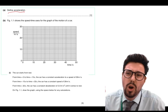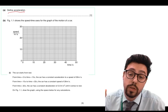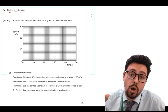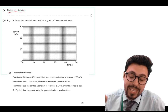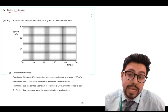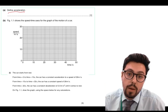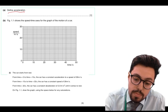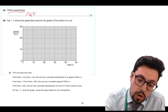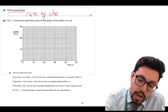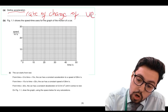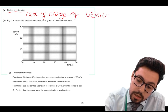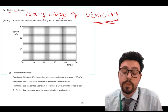The really common mistake people were making on this question was they were saying 'rate of change of speed.' What you must do when defining acceleration, you must say 'rate of change of velocity.' You must, must, must use the word velocity here.